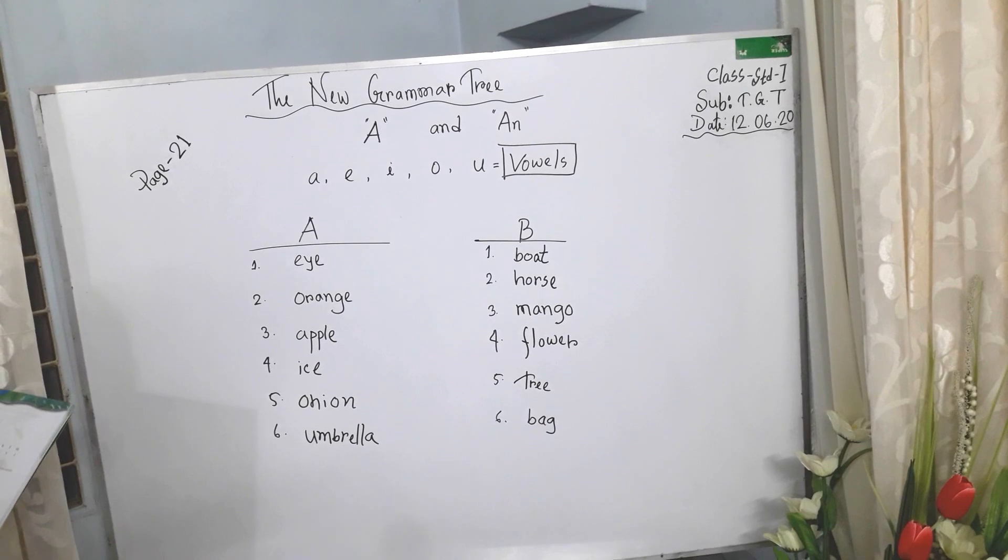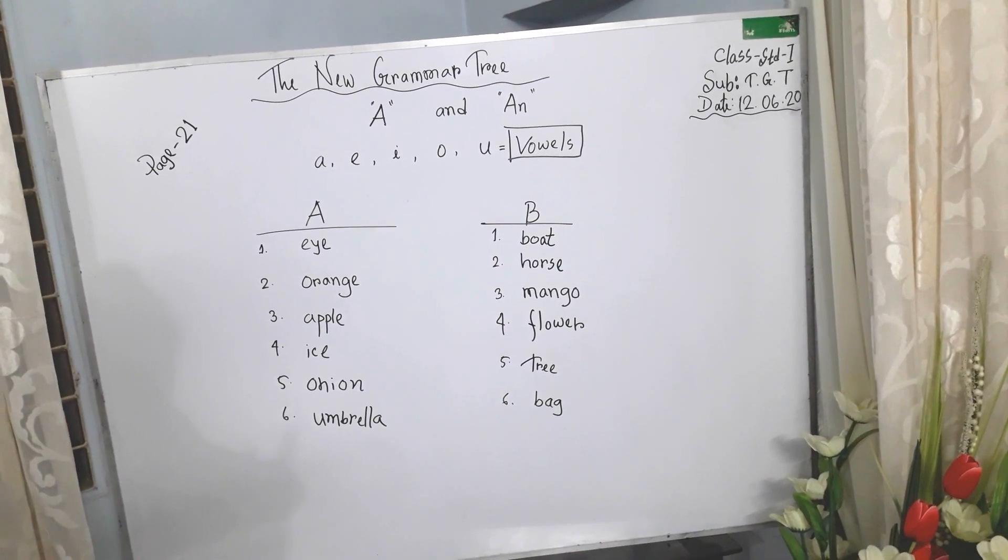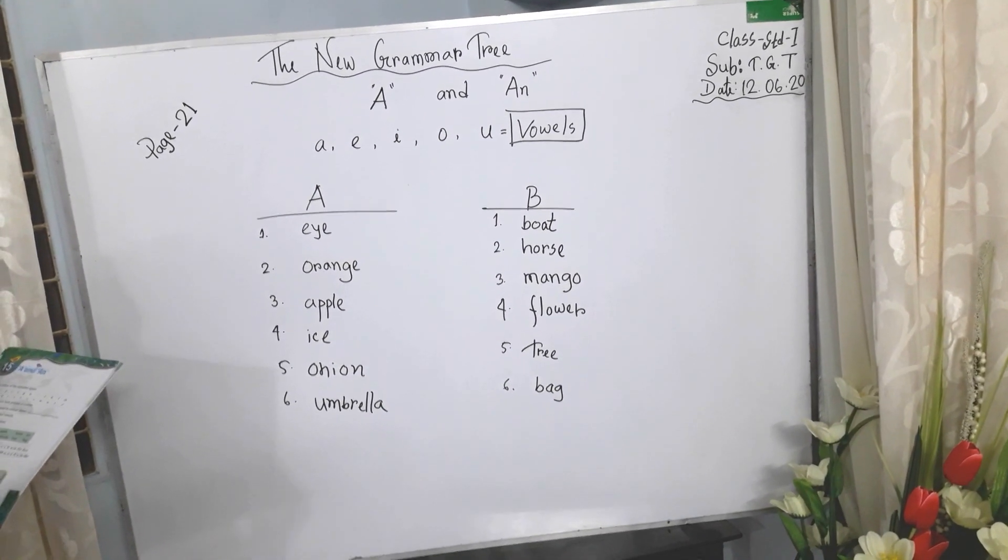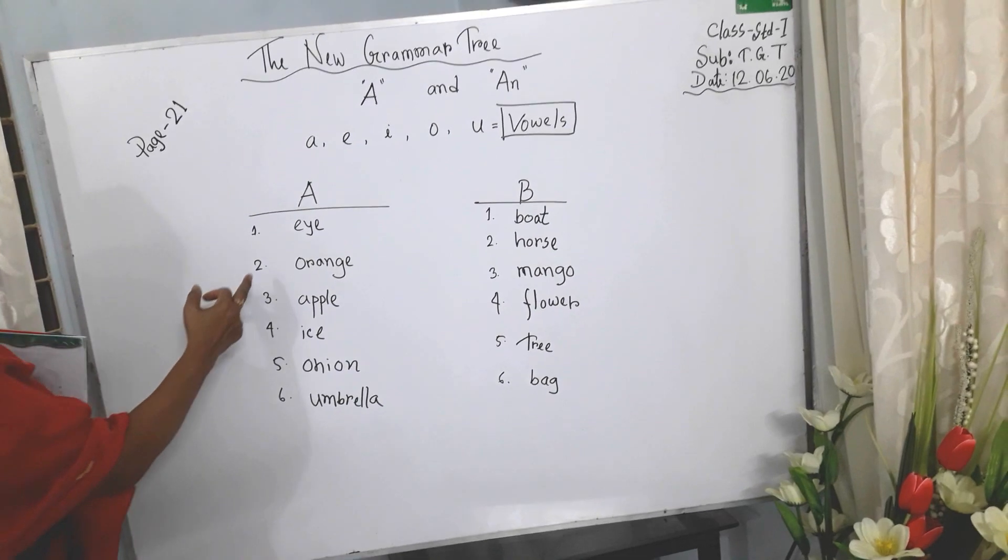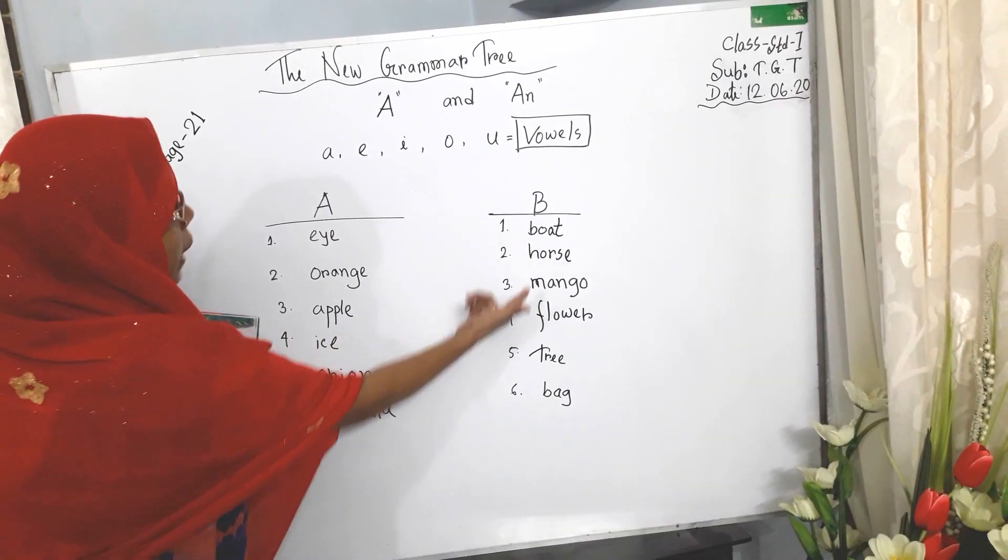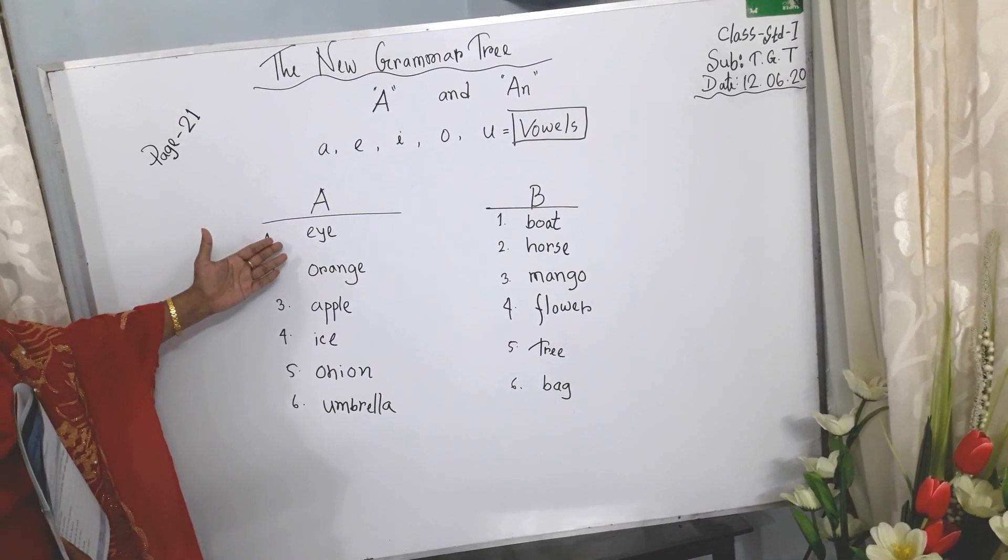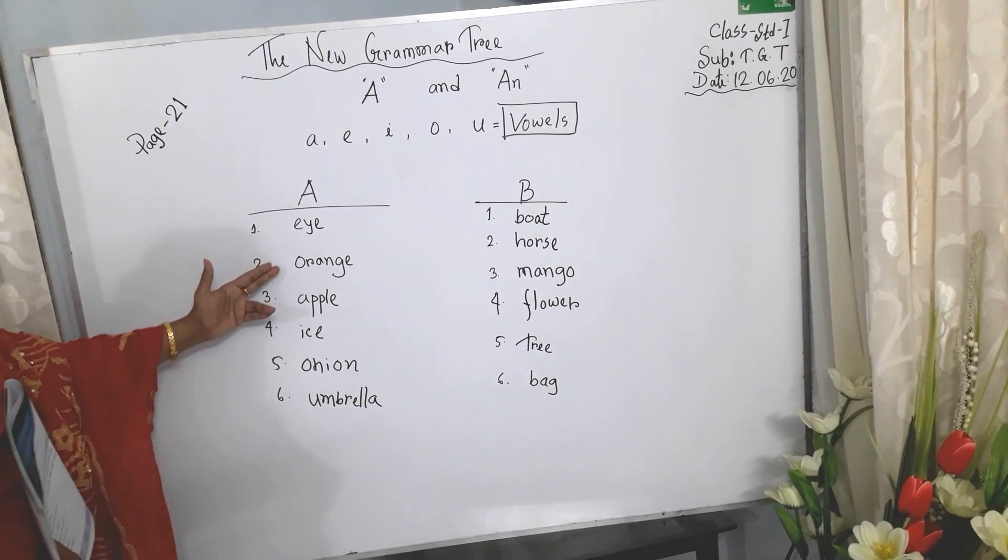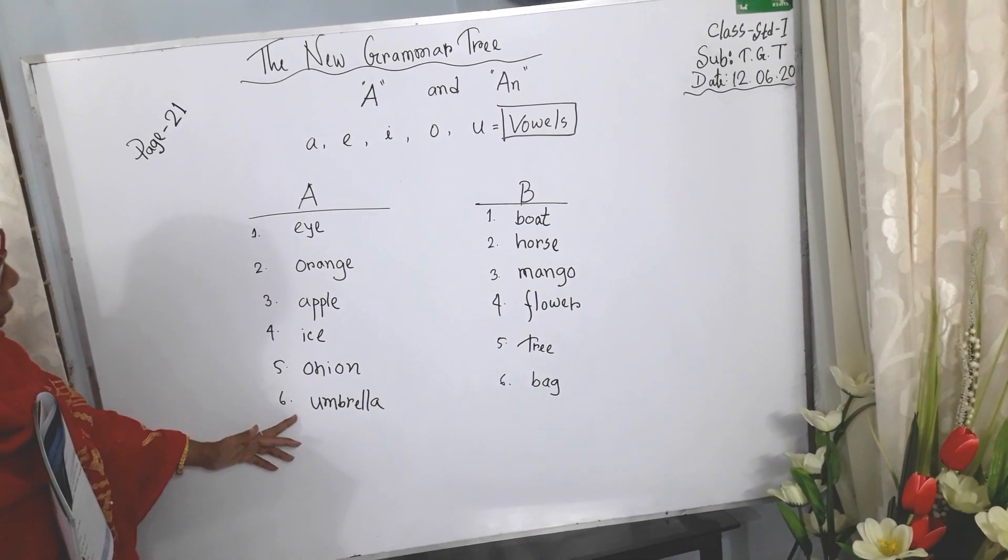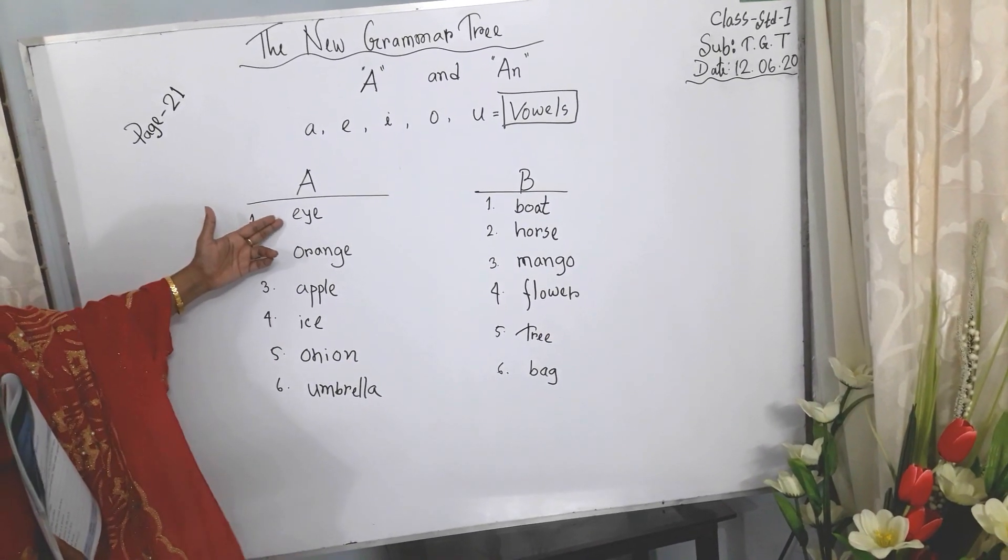Write the words beginning with vowels A, E, I, O, U in box A and in box B. Please see here. Every word begins with vowels.